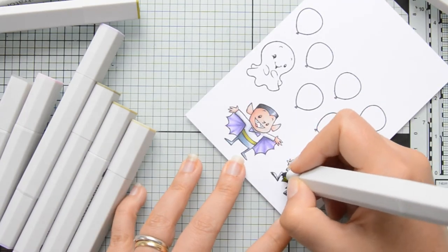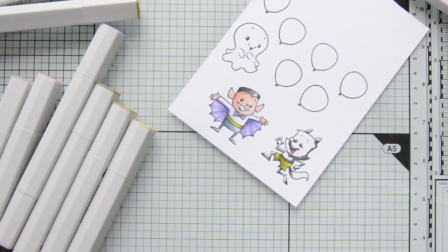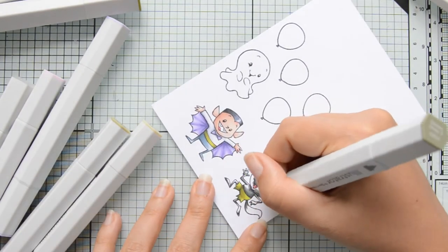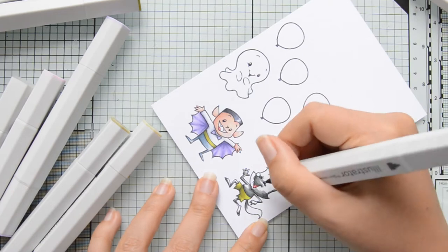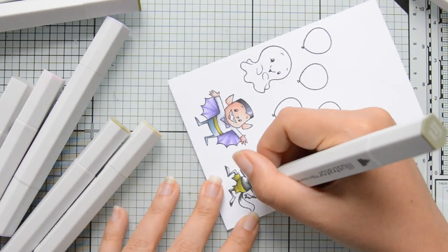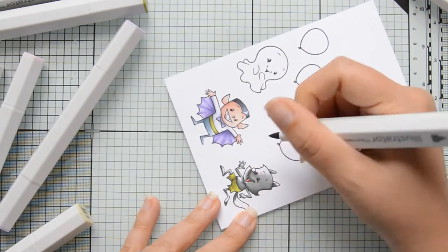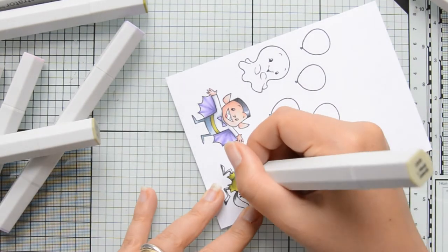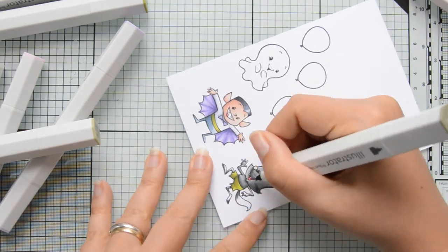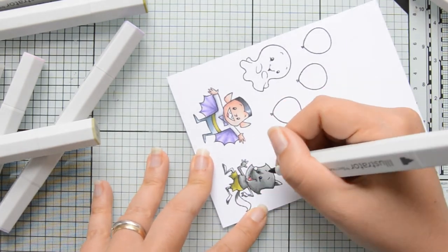To shade in the fur of the werewolf, I used some green gray markers: GG5, GG3, and GG1. And here is where I made a mistake in the shading of the werewolf, because I shaded his trousers as if the light was coming from the top right of the screen, so in the same way that I did for the vampire.